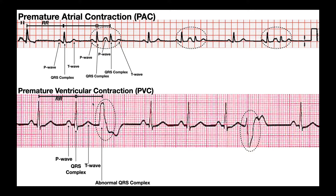Unlike the PACs, this T wave that precedes the PVC's QRS is only a T wave — it is not also a P wave. That makes sense because this wide, rounded QRS means the original signal was not created by the atria. If it were created by the atria, we would see a P wave, since that represents atrial depolarization. This signal is completely originating in the ventricle, so there is no P wave required for this to activate. This is purely a T wave coming after the preceding normal QRS complex.